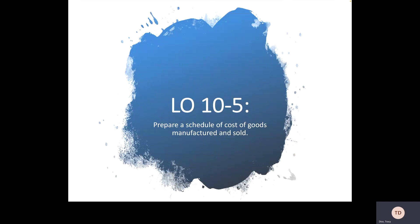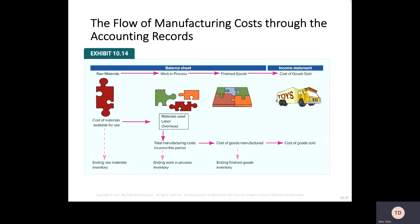Prepare a schedule of cost of goods manufactured and sold. Here's where we get into this chart. In the beginning you have your raw materials — that's what you buy — shown on your balance sheet. You then have your cost of materials available to use, which represents what those purchased materials cost.